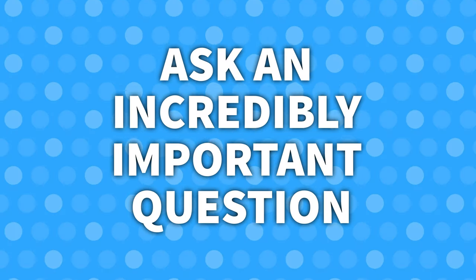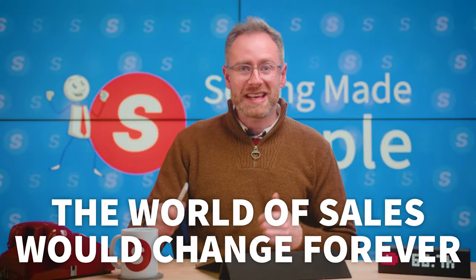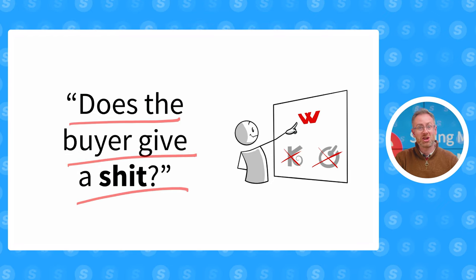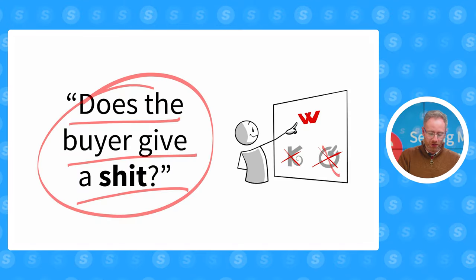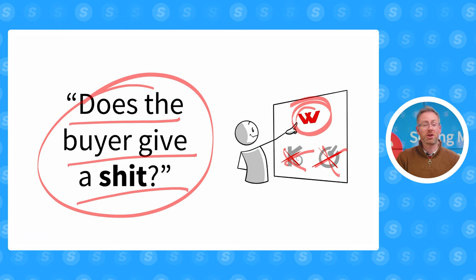And the final step in this first part of the process is to ask an incredibly important question — a question that if more salespeople asked this before they did cold calls, cold outreach, built cadences, and communicated about their product, the world of sales would change forever. And that question is: does the buyer give a shit? For each one of the products and the pain reducers or value producers that you've included in your list, run through all of them and ask yourself: does the buyer really, genuinely, give a shit about this? If not, cross them off, until you end up with one or two that are going to be the most powerful and effective to share in your elevator pitch.